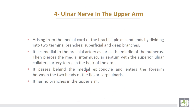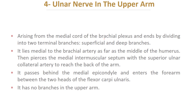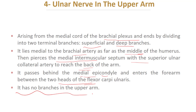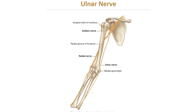The fourth nerve is the ulnar nerve in the arm, arising from the medial cord of the brachial plexus, and ending by dividing into superficial and deep branches. It lies medial to the brachial artery as far as the middle of the humerus, then pierces the medial intermuscular septum with the superior ulnar collateral artery to reach the back of the arm. It passes behind the medial epicondyle of the humerus and enters the forearm between the two heads of flexor carpi ulnaris. It has no branches in the upper arm.